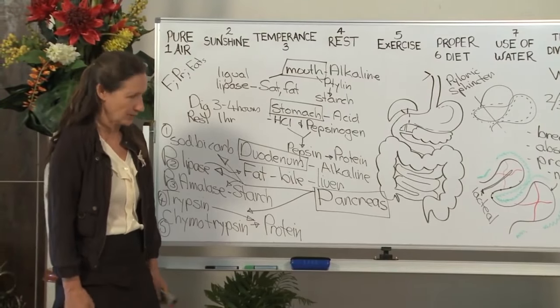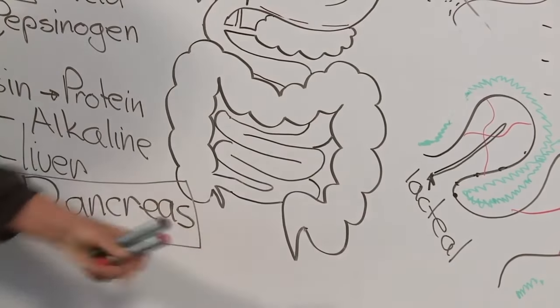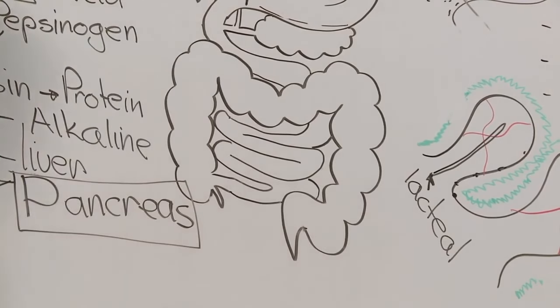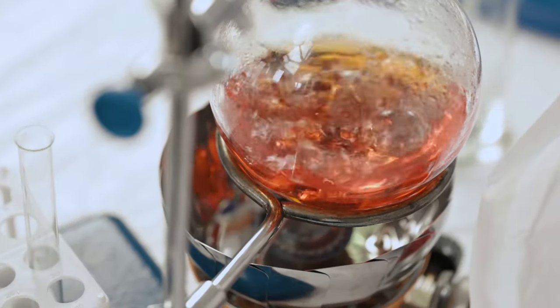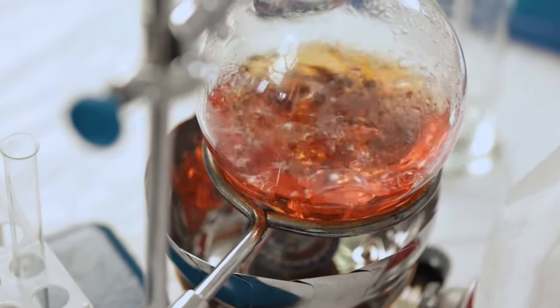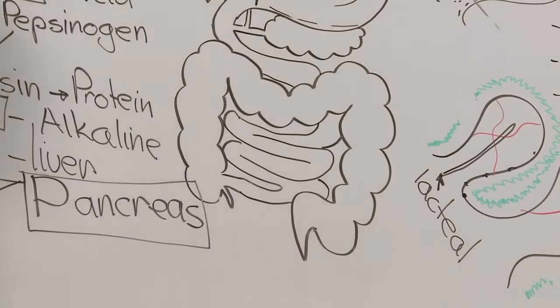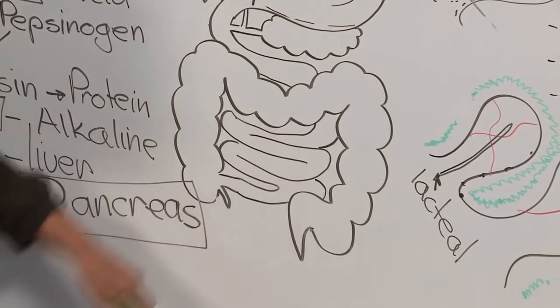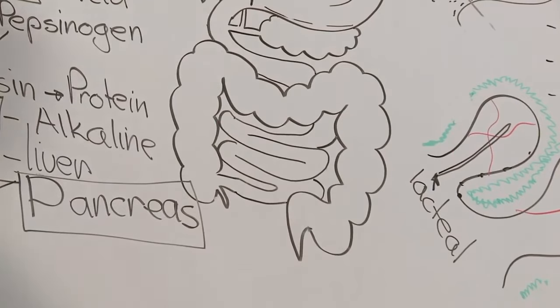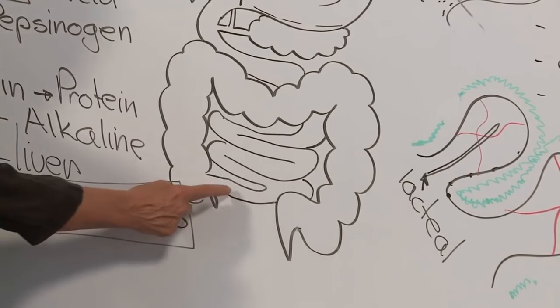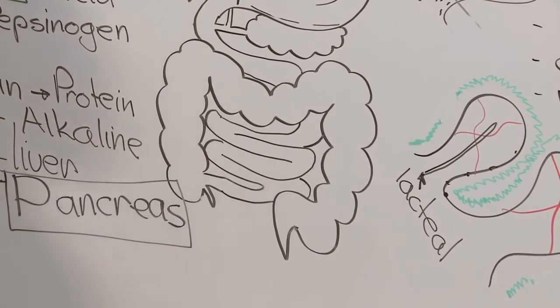God didn't make a mistake. God never makes a mistake. What's the appendix for? It's called the colon's oil can. Because what it does, it releases an oily substance that helps to lubricate and move the food through the colon. It releases something else, an antibacterial fluid.